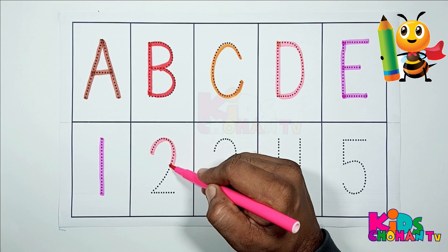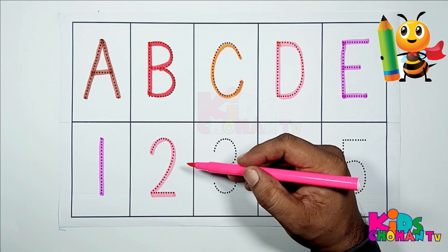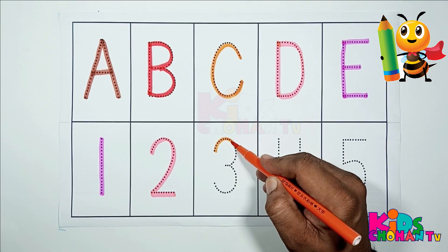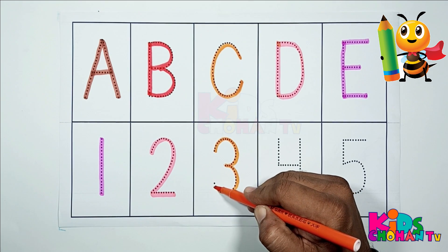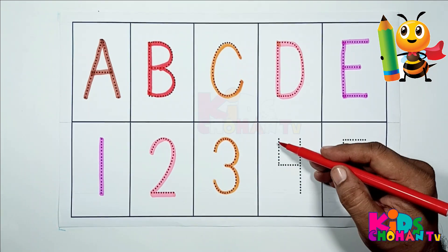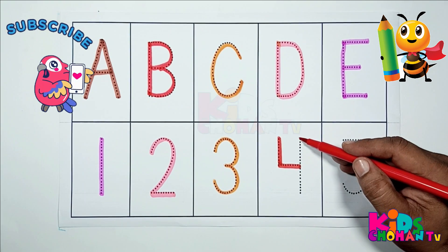Here we are tracing number two. T-W-O, two. This is number two. Now we are tracing number three. T-H-R-E-E, three. This is number three.